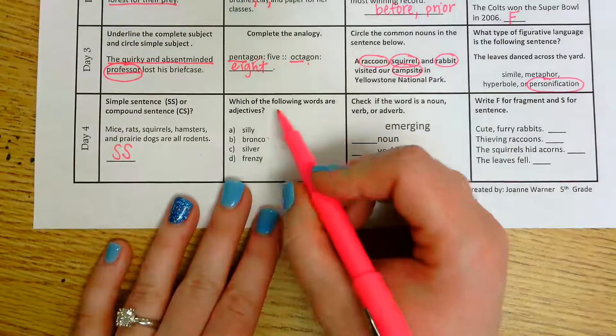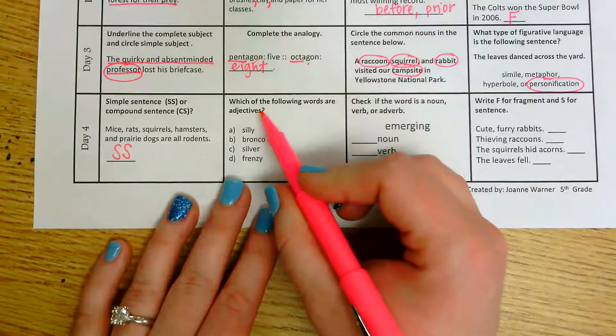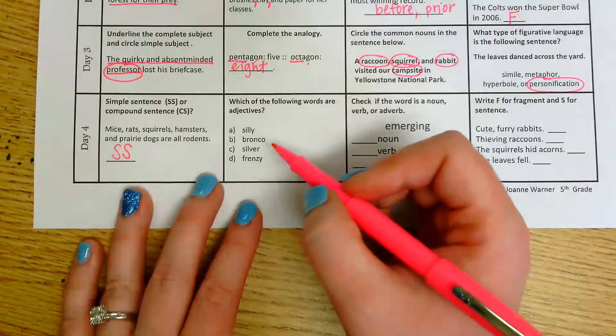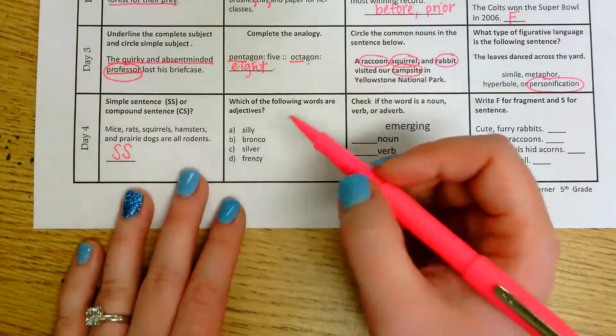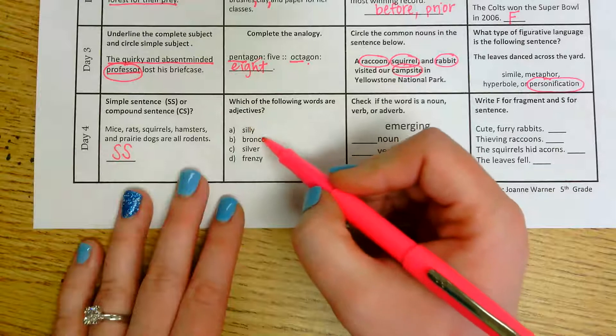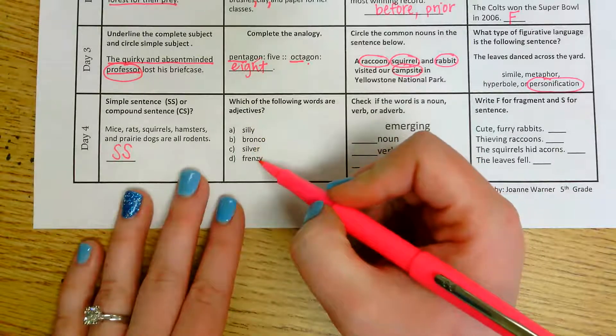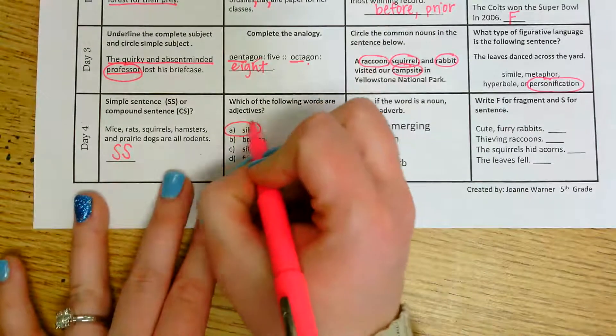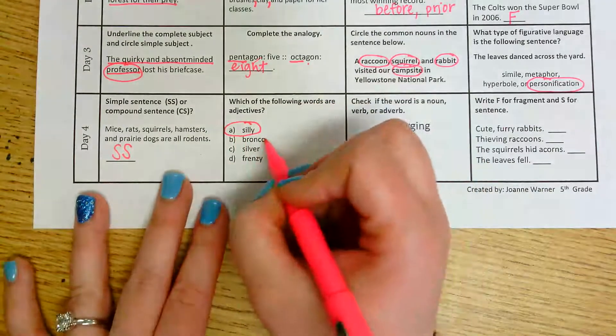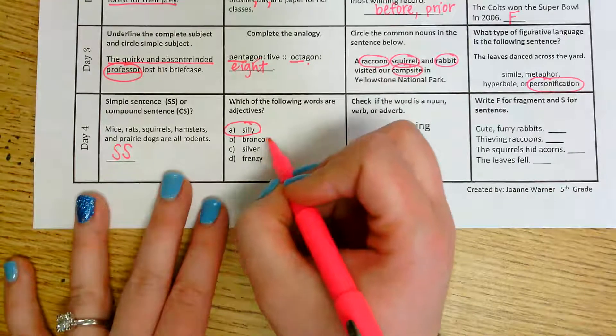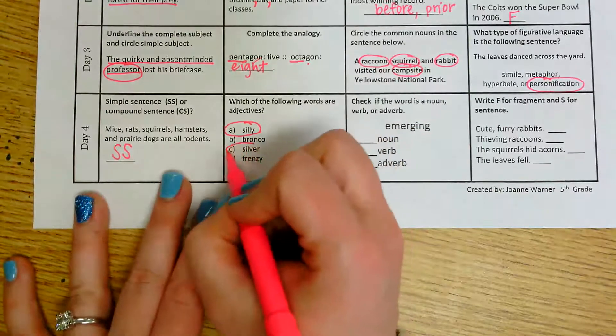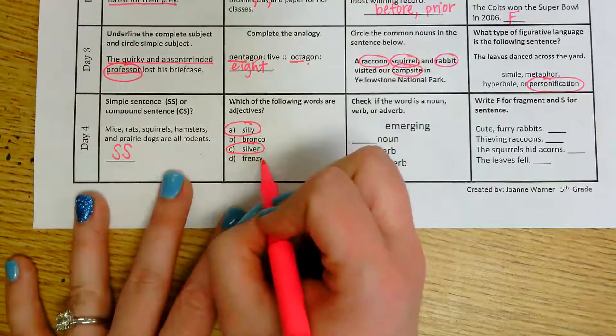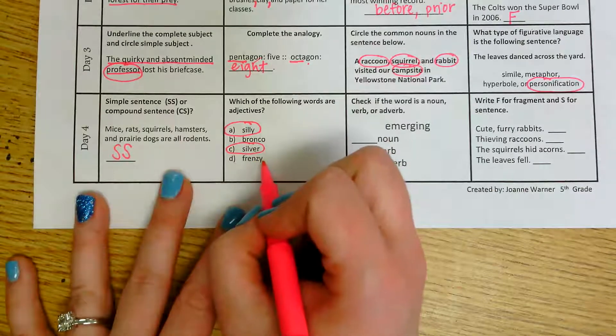The next one, which of the following words are adjectives? So I'm looking for any word that would be used to describe a noun. So we have silly, bronco, silver, and frenzy. Well, I know that I can use the word silly to describe something. Bronco is a noun because it is a thing. Silver can be used to describe and frenzy would also be a noun because it is a thing.